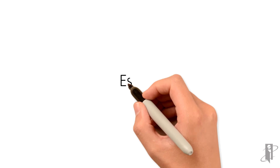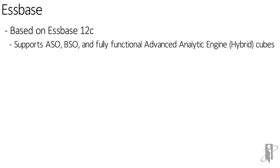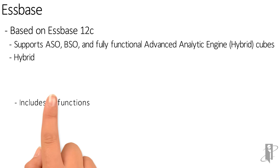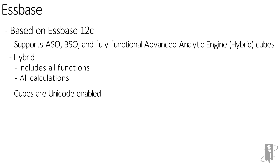The Essbase part of OAC is based on 12c, which means it supports ASO, BSO, and a fully functional advanced analytic engine with Hybrid cubes. Hybrid cubes include all functionality — all functions from 11g and 12c that previously didn't work with Hybrid now work, and all calculations will work even against upper-level members and cross-dimensional operators. All cubes are set up to be Unicode-enabled.